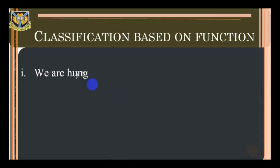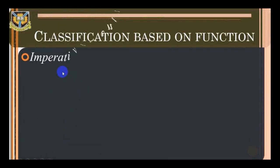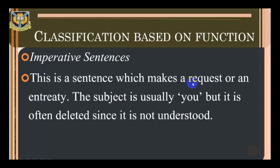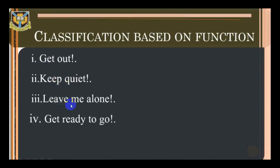Examples of declarative sentences: 'We are angry.' 'She is not serious.' 'They are tired.' 'We love ladies.' Imperative sentences: this is a sentence which makes a request or an entreaty. The subject is usually 'you' but it is often deleted since it is understood. Examples: 'Get out,' 'Keep quiet,' 'Leave me alone,' 'Get ready to go.'